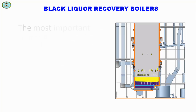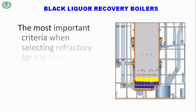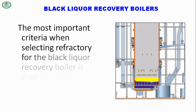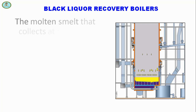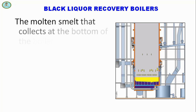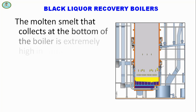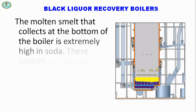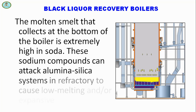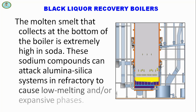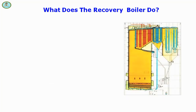The most important criteria when selecting refractory for the black liquor recovery boiler is their resistance to the process smelt. The molten smelt that collects at the bottom of the boiler is extremely high in soda. These sodium compounds can attack alumina-silica systems in the refractory to cause low melting and other expensive phases.